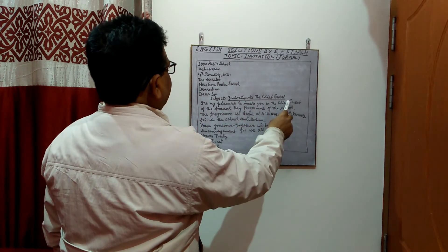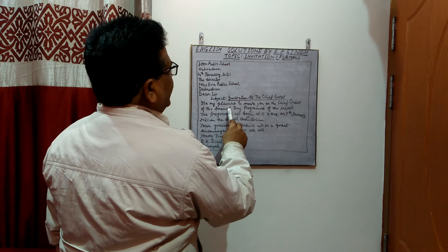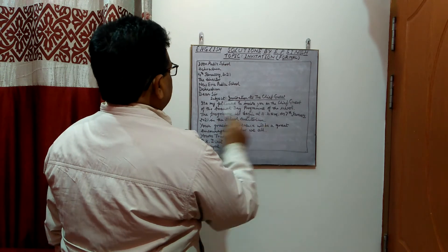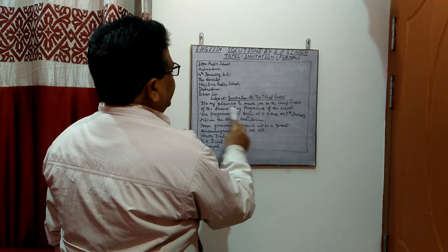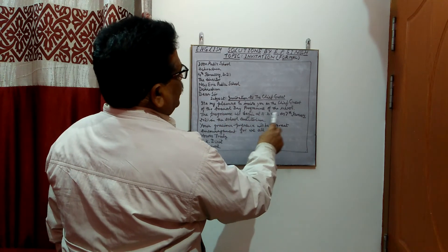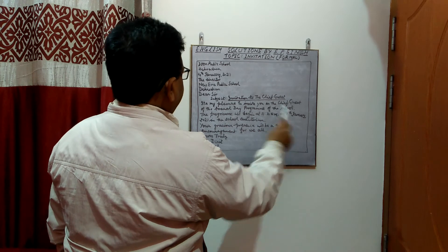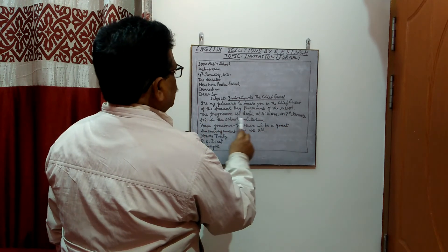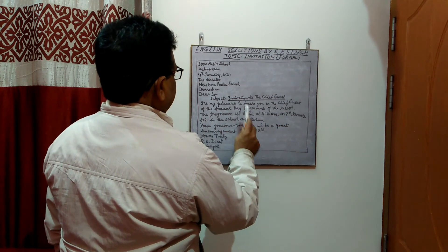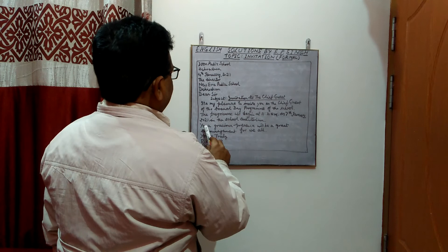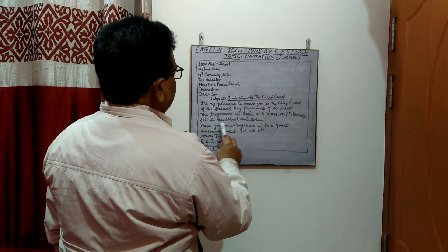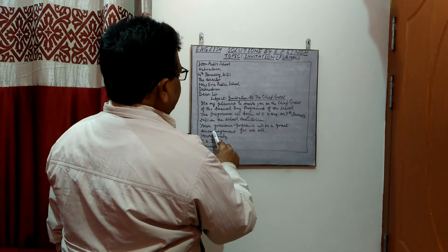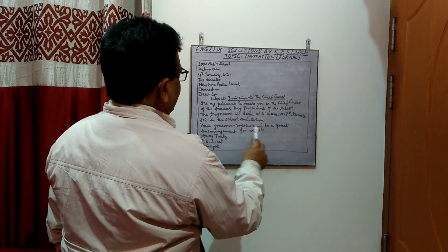The body reads: 'It is my pleasure to invite you as the chief guest of the annual day program of the school. The program will begin at 11 a.m. on 7th January 2021 in the school auditorium.' Then the next paragraph: 'Your gracious presence will be a great encouragement for all.'